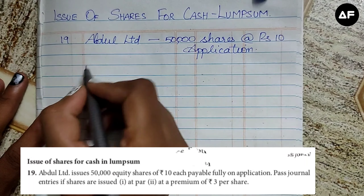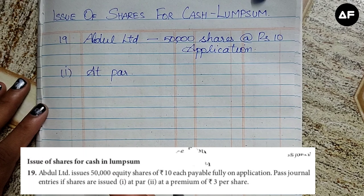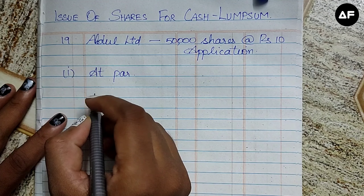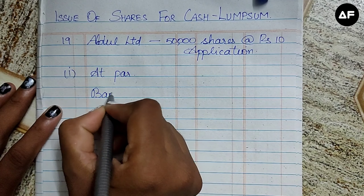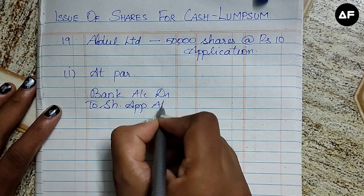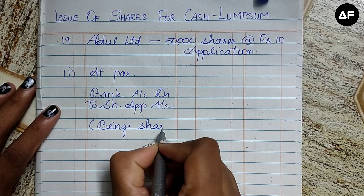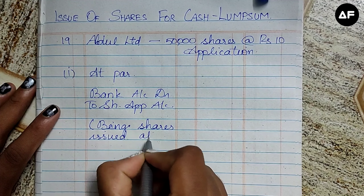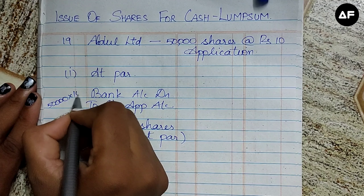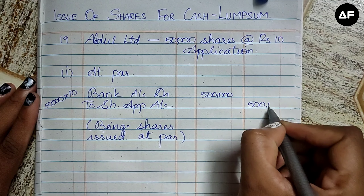We must pass journal entries for shares issued at par, that is the receipt of share application money in lump sum. When receiving the money through the application process itself, the entry is: Bank Account Dr. to Share Application. For the calculation: 50,000 shares into ₹10 face value gives a total amount of five lakhs. This is a very simple sum when shares are issued at par and money is received during application itself.